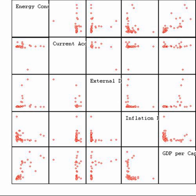Statistics offers methods to estimate and correct for any bias within the sample and data collection procedures. There are also methods of experimental design for experiments that can lessen these issues at the outset of a study, strengthening its capability to discern truths about the population. Sampling theory is part of the mathematical discipline of probability theory. Probability is used in mathematical statistics to study the sampling distributions of sample statistics and, more generally, the properties of statistical procedures. The use of any statistical method is valid when the system or population under consideration satisfies the assumptions of the method.